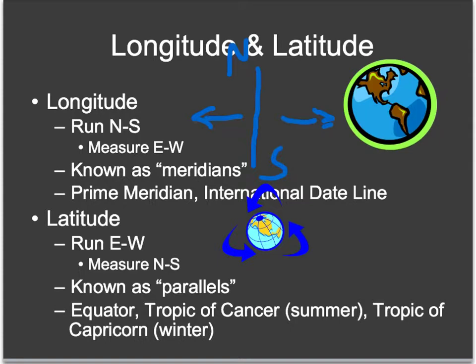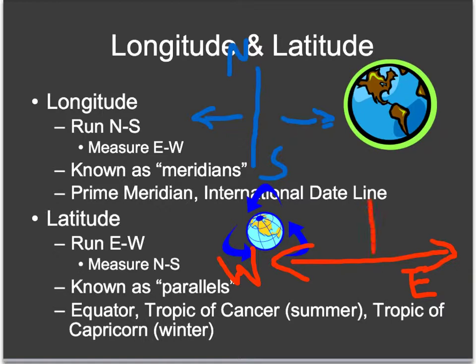Moving on to lines of latitude. With lines of latitude, you are essentially running east and west, but they're going to be measuring north or south as you move these lines up or down. These lines of latitude are also known as parallels. Some famous lines of latitude: the equator, the center of the world, and the Tropic of Cancer, which basically measures where the summer solstice occurs, and then the Tropic of Capricorn, which measures where the winter solstice occurs. The Tropic of Cancer is in the northern hemisphere and the Tropic of Capricorn is in the southern hemisphere.